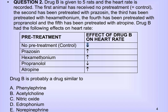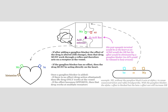So that helps. With hexamethonium, we get flipped arrows here. This is the special rule — if the effect of the ganglion blocker makes the arrows go in opposite directions, then that drug works at multiple receptors. So you can memorize that or we can walk through it.